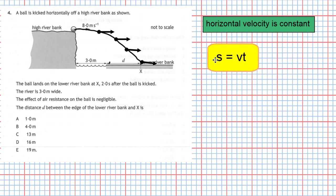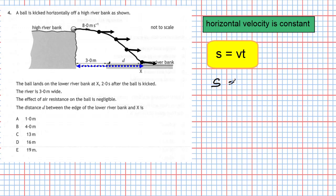Therefore we can work out the horizontal distance traveled by the ball using our equation from the relationship sheet: displacement s equals v times t. The horizontal displacement s is really the distance between the bottom of the cliff and where it lands. So s equals vt, and the horizontal velocity stays the same: eight meters per second.